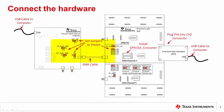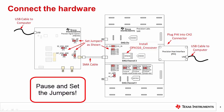Now that we've done the simple calculation, let's set up the hardware and measure the performance. First, set the jumpers on the PSI and the PLABS hardware as shown. Next, plug the PHI into the PLABS channel 2 connection and install the OPA316 into the channel 2 socket. Connect the PSI to the PLABS board using the SMA cable as shown. Finally, plug the USB cables into your computer. When connecting the USB cables, an LED on the PHI should blink and an LED on the PSI will illuminate continuously.